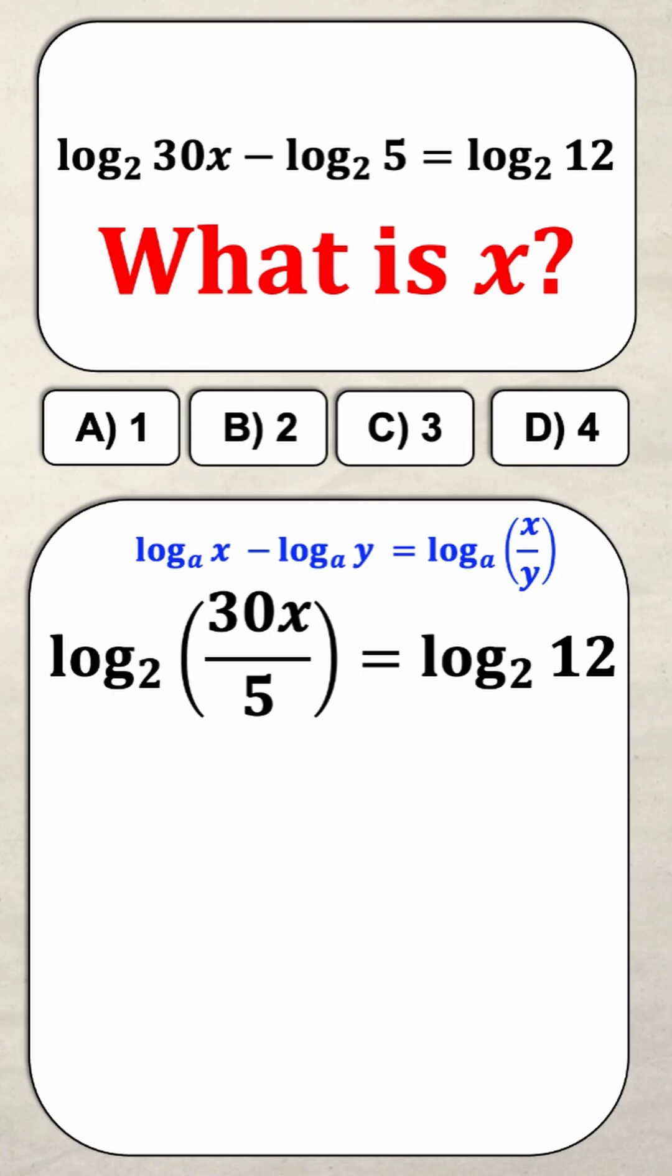Well, if I simplify what's in the brackets, then it's going to give me log base 2 of 6x is equal to log base 2 of 12. And once again, you can see they're both base 2 on both sides.